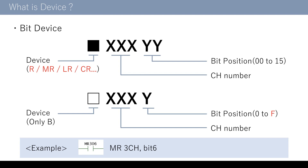I will explain about the device notation. The first one is a bit device. Bit devices are displayed with the device name and the device number. There are several device names. R is the device which the unit function is allocated. MR is the internal auxiliary relay which turns on-off only in the program. LR is the device which memorizes the on information even when the power is off. CR is the device which the PLC system information is allocated. In the device number, the last two digits indicate the bit position, and other digits indicate the channel number.